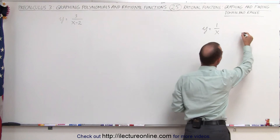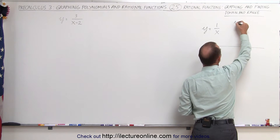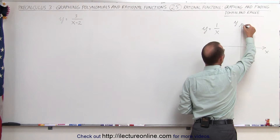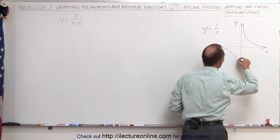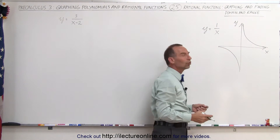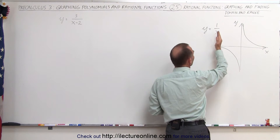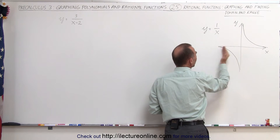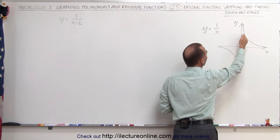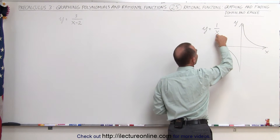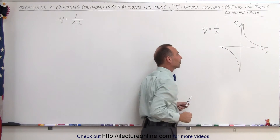If you were to graph this, it would look something like this. This is the y-axis and this is the x-axis. The graph looks like this on one side and like this on the other side. You can try with a table of values — plug in a value greater than 0 and you'll be on the right side; plug in a value less than 0 and you'll be on the left side. Notice when x becomes very small, 1 over a very small number becomes very big. When x becomes very big, 1 divided by a very big number becomes very small. And if x is negative, you're on the left side of the graph.